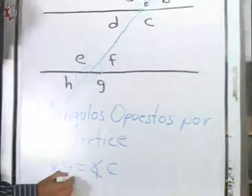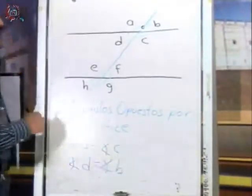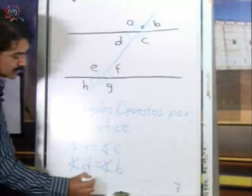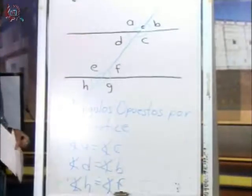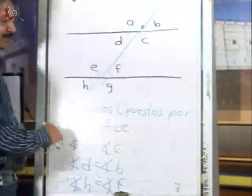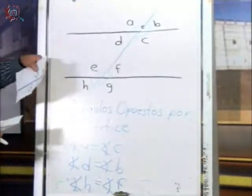El ángulo D y el ángulo B. El ángulo H y el ángulo F. Ahí tenemos ya otro concepto: ángulos opuestos por el vértice son iguales y los podemos corroborar de la misma manera.